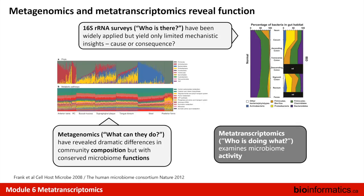Why metatranscriptomics? 16S is good for telling us who's there but gives relatively limited mechanistic insights. Metagenomics, which we covered all day yesterday, costs are starting to come down and it's good at identifying function and determining differences across samples. But metatranscriptomics goes further - it's not just what functions are present, it's which ones are actually active. It tells you something about the active function of a microbiome.